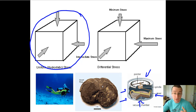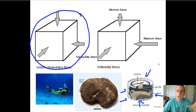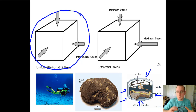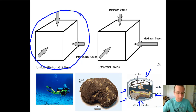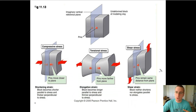So that's hydrostatic pressure. We're going to be focusing mostly on directed pressure or differential stress, which happens when one side receives more stress than another, causing the object to actually change its overall shape. Rocks undergo a lot of differential pressure.